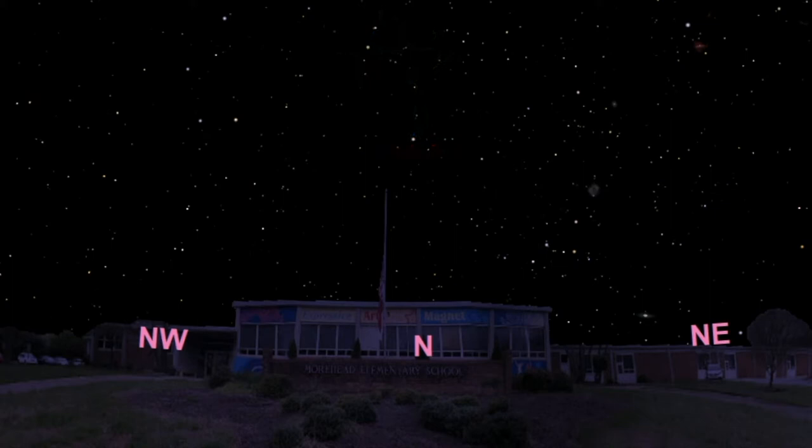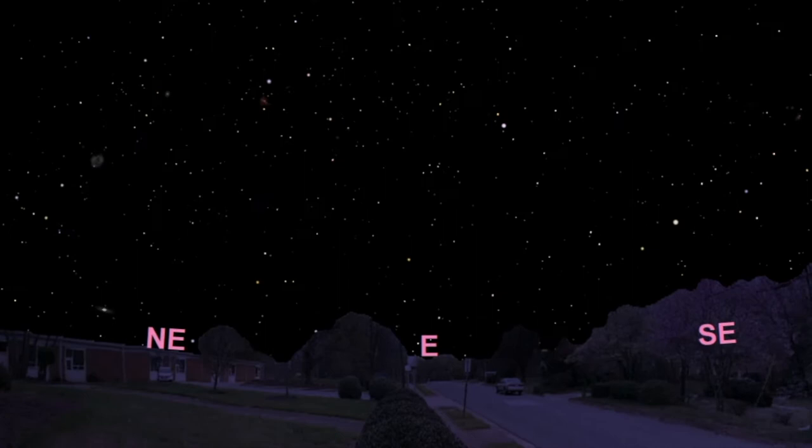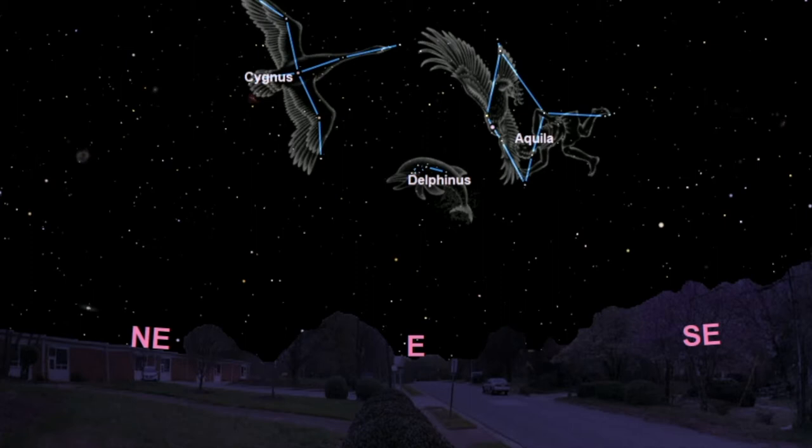As we are now officially in the summer season, there are a couple different constellations that are highly visible now. If we look towards the east, we can see Delphinus the Dolphin, Aquila the Eagle, as well as Cygnus the Swan, just to name a few.